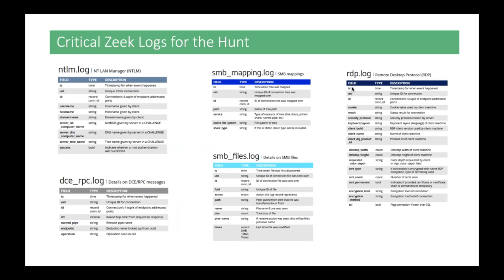We're looking at Microsoft logs parsed by Zeek. NTLM - New Technology LAN Manager - is used for remote login and authentication against domain controllers. NTLM links to many different things including file access over SMB or mapping a share, using it against RDP, and when authenticating using DCRPC you can also see that type of information used with NTLM.